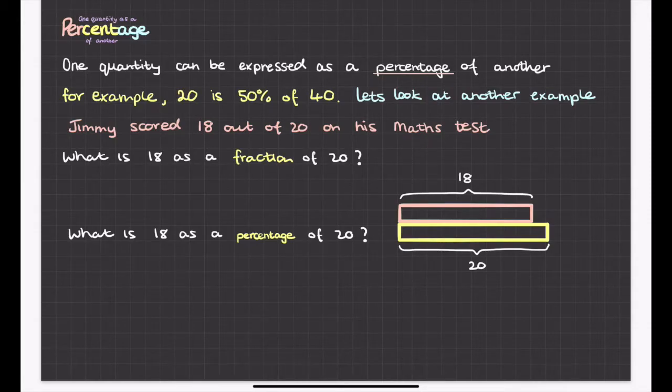One quantity can be expressed as a percentage of another. For example, 20 is 50% of 40.